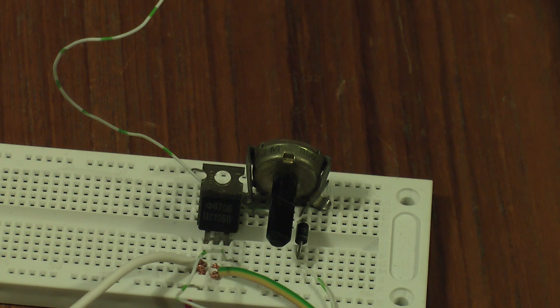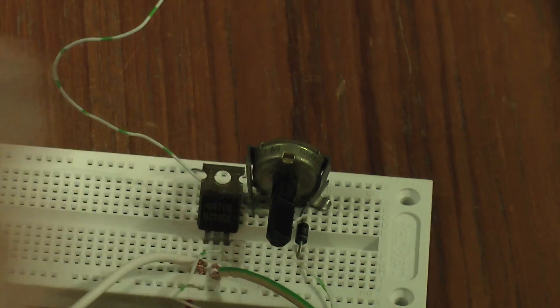For those who don't know, a silicon-controlled rectifier will conduct in one direction once power is applied to the gate signal, which on this SCR is the right-hand pin.